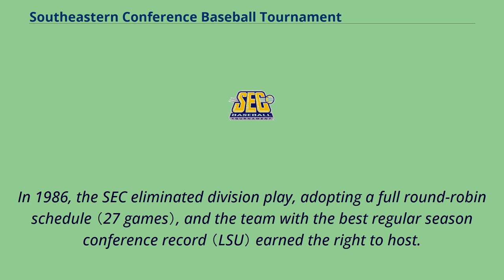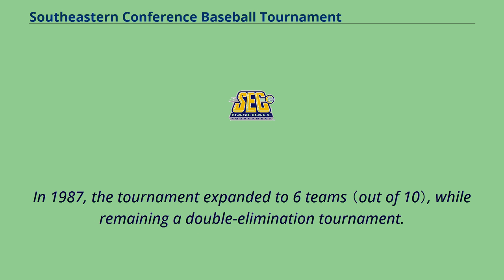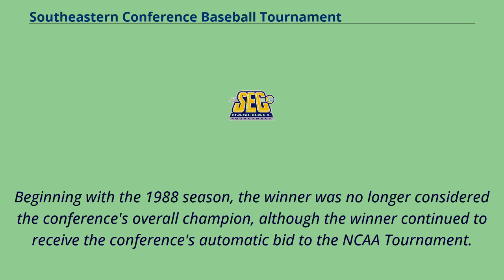In 1986, the SEC eliminated division play, adopting a full round-robin schedule, and the team with the best regular season conference record earned the right to host. In 1987, the tournament expanded to six teams while remaining a double elimination tournament. Beginning with the 1988 season, the winner was no longer considered the conference's overall champion, although the winner continued to receive the conference's automatic bid to the NCAA Tournament.